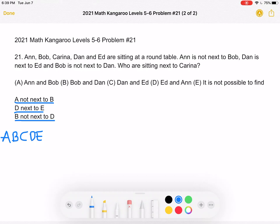We know that A is not next to B, and we know that B is not next to D. So we know that B must be sitting between C and E.